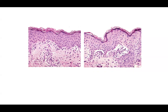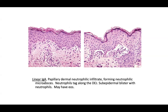Clinically this patient was given vancomycin and had a lesion of the so-called crown and jewels — a bulla forming with little circular concentric bullae around a larger bulla. This is linear IgA bullous dermatosis — a papillary dermal neutrophilic infiltrate forming neutrophilic micro-abscesses that look nearly identical to dermatitis herpetiformis, so you need some clinical correlation.